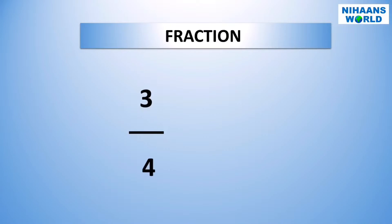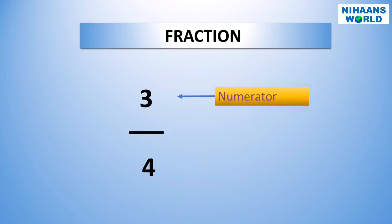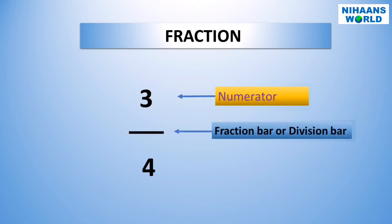Look at the fraction three-fourths. The number above the line is the numerator. It indicates the number of equal parts considered. The line is called fraction bar or division bar. The number below the fraction bar is called the denominator. It indicates the total number of equal parts the whole number is divided into.